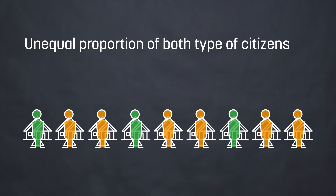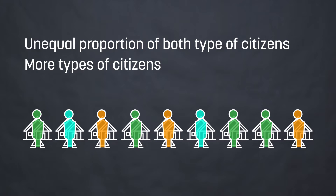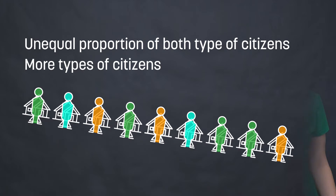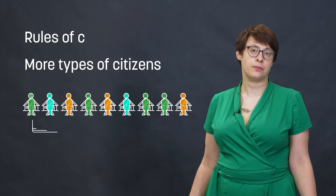We can also add an unequal proportion of both types of citizens. Imagine a very small group of green ones and a very big group of orange ones. And we can also add one more group or two more groups, which really is what happens in real life.